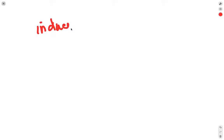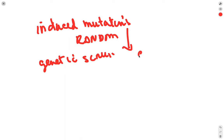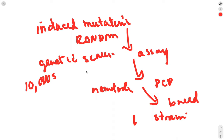At MIT in the lab, they produce induced mutations — random ones — and then do a genetic screen. A genetic screen is where you have mutations and then have an assay to identify individual nematodes with a problem in programmed cell death. You save those and breed them — that's called a strain. That screen can involve tens of thousands of nematodes because there's some kind of genetic pathway leading to programmed cell death, and you want to find all the genes.